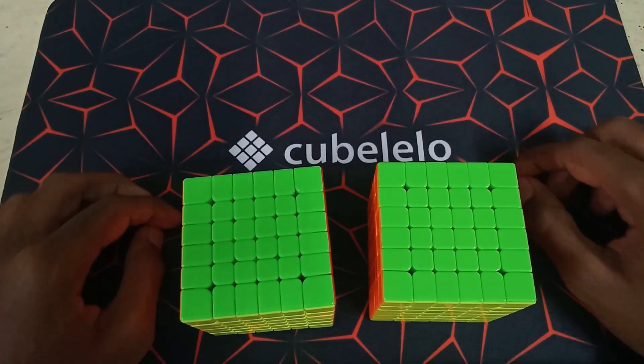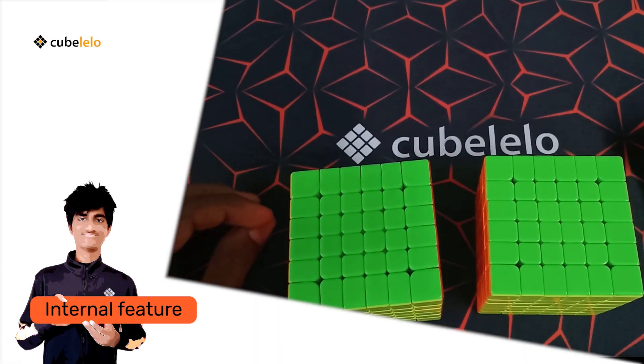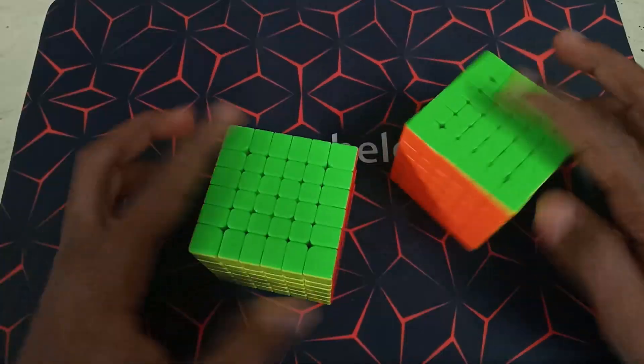So I think that's all for the external features. Now we'll move on to the very important internal features, which everyone mostly looks at when they're purchasing cubes. So let's start out with the tensions.